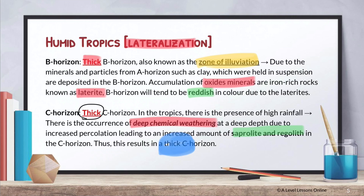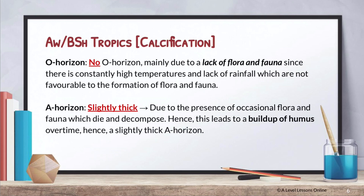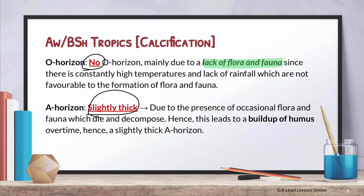Now looking at the savannah or tropical steppes, these regions undergo the process of calcification. Going horizon by horizon: the O horizon — which is all your decayed material — there is no O horizon here because of a lack of flora and fauna. Since there are constantly high temperatures and no rainfall, it does not help in forming any flora and fauna. As for the A horizon, it is actually slightly thin, but slightly thicker than the B and C horizons, because of occasional flora and fauna which die and decompose, forming humus.